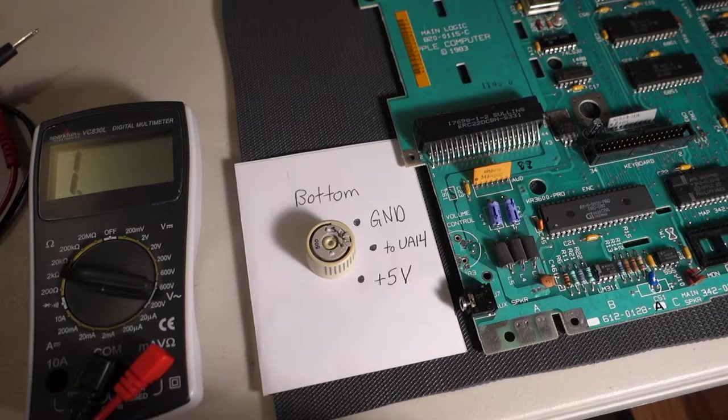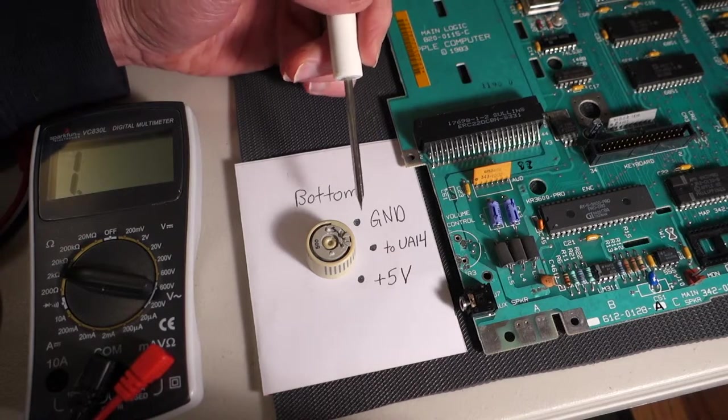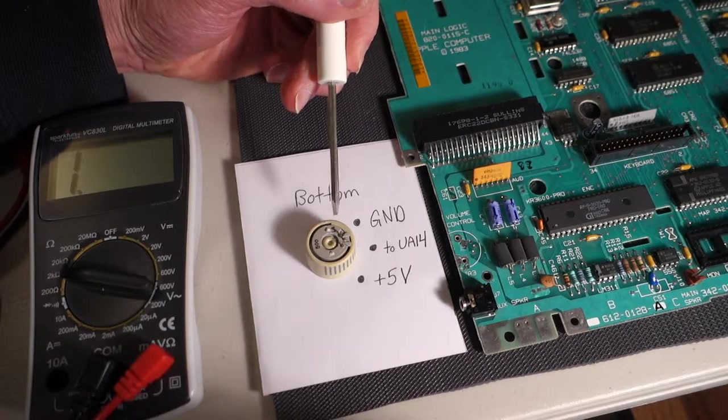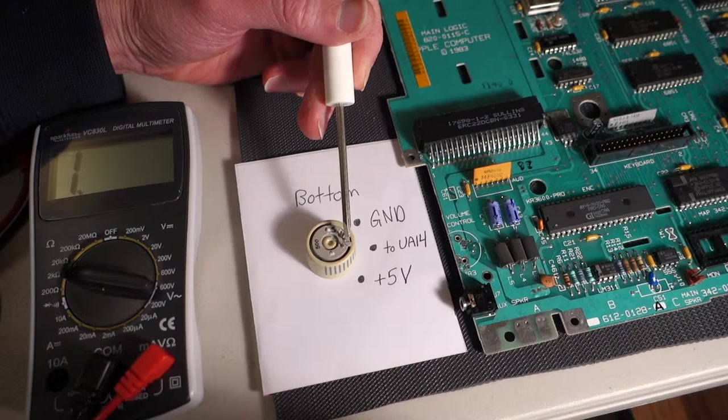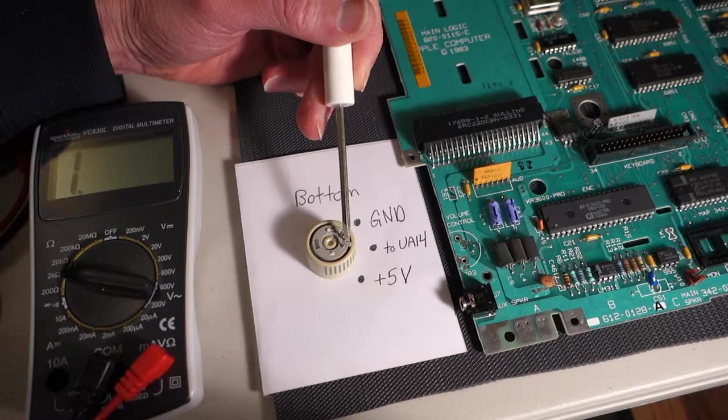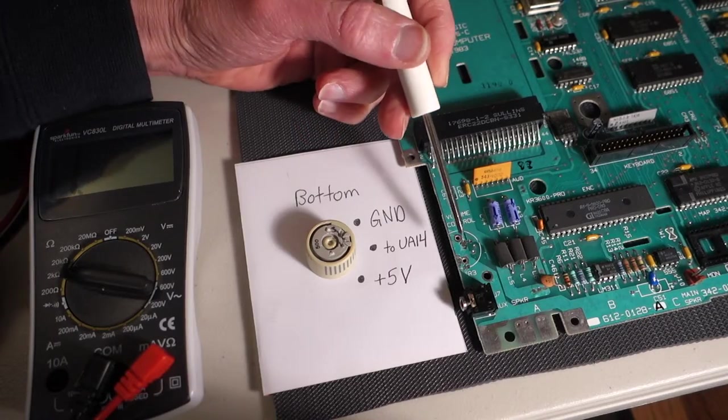So here's the volume button removed from the Apple IIc logic board and there's three pins on it. So this is the bottom view. So we've got the ground pin, the pin that's going to the UA14 audio package and then the plus five volt pin.